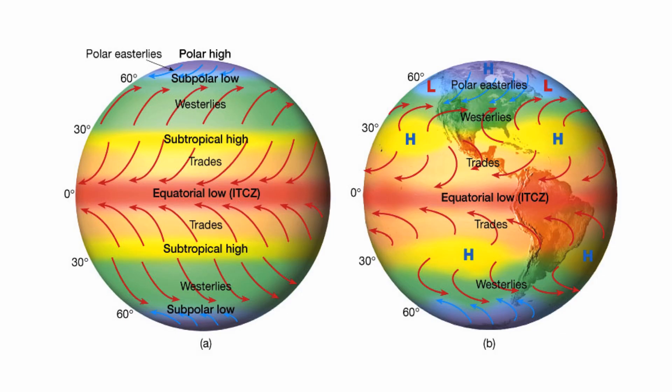Looking at the diagram, winds blow from the north pole (90° N) toward 60° N, from 30° N up to 60° N, and from 30° N down to the equator. Similarly, winds blow from 30° S to the equator, from 30° S to 60° S, and from 90° S to 60° S. There's a variety of directions, but they always follow the Coriolis effect — curving right in the northern hemisphere and left in the southern hemisphere.